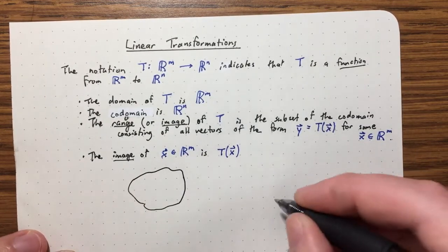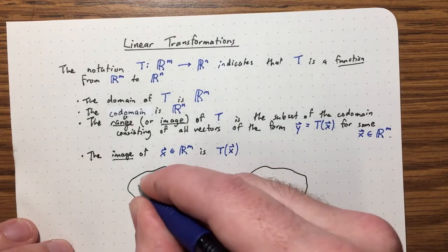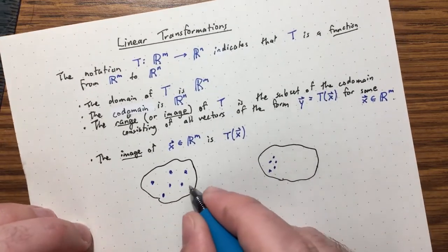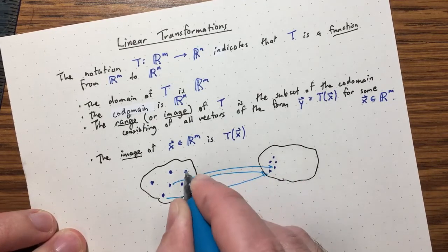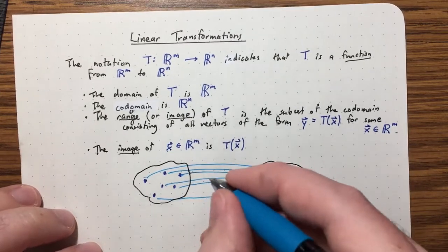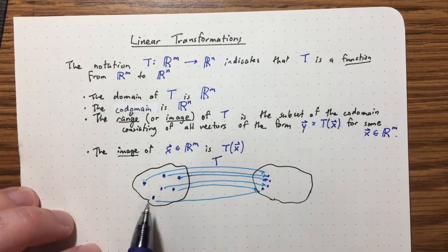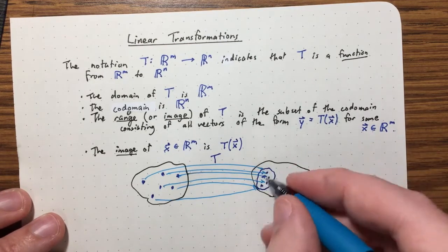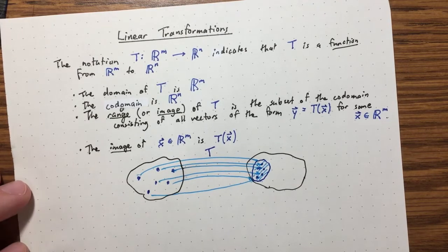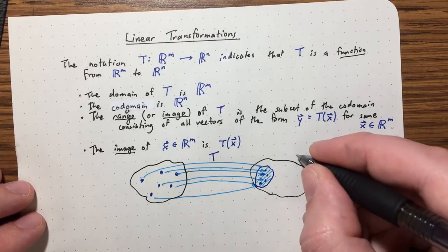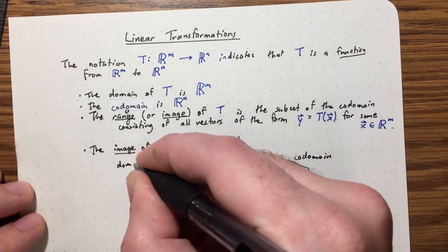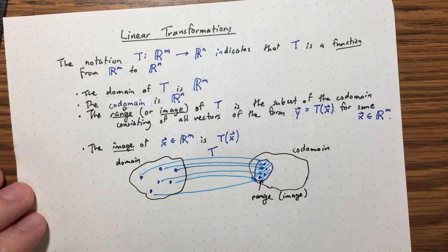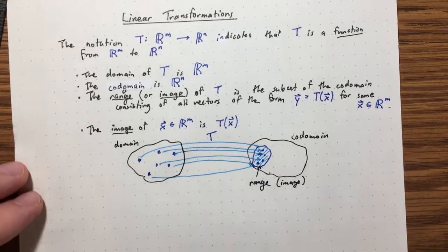Let's draw a picture. Here's my domain and here's my codomain. We have a bunch of points in the domain mapping to some points here — maybe some of them going to the same point. This entire region is the codomain, this is the domain, but the range is just this part here. The image of a particular element here is maybe that element there.